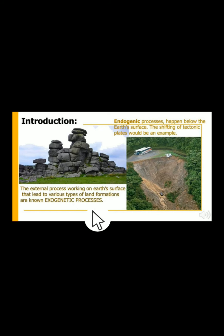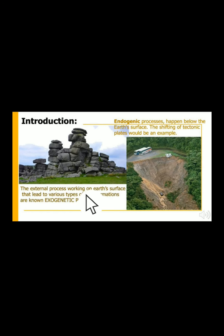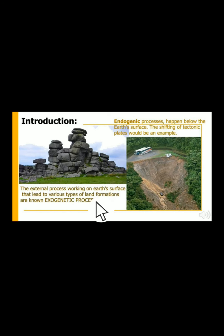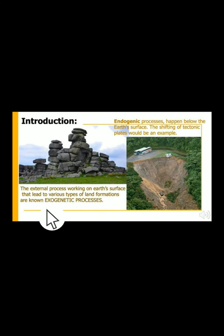So what is the meaning of that? They are external processes occurring on the earth's surface — we can see them occurring on the earth's surface. This is very important: on the earth's surface, they lead to formation of new landforms. So a new landform can be formed because of these external processes, and these are known as exogenetic processes.